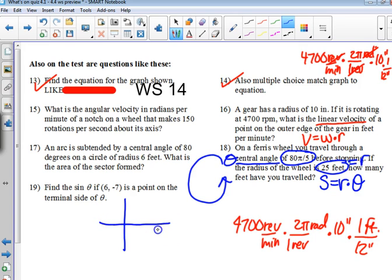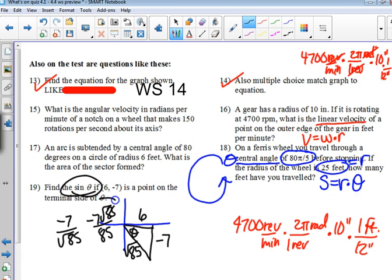What quadrant is 6, negative 7 in? 4th. I went right 6 and down 7. So you're just drawing it. And then it wants the sine. So I have to do Pythagorean theorem. It's square root of 85. Because negative 7 squared is 49. 49 and 36 is 85. How do you find the sine of that angle? Opposite over hypotenuse, which is negative 7 square root of 85 over 85.